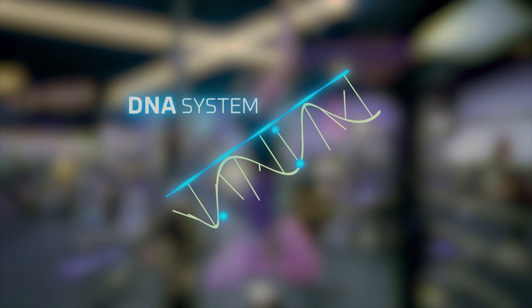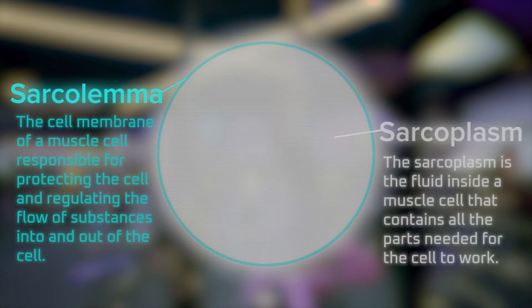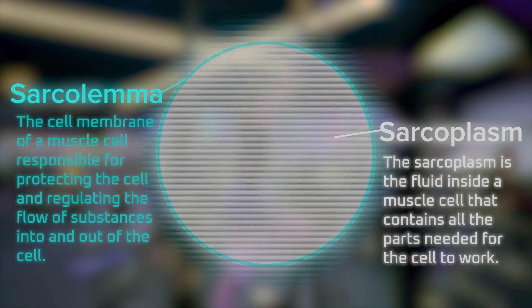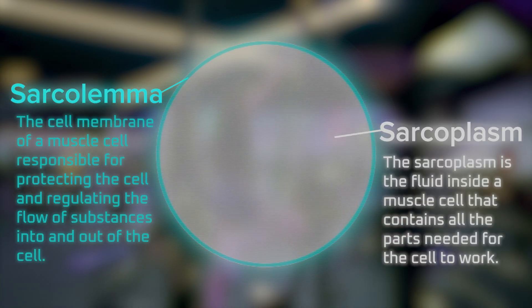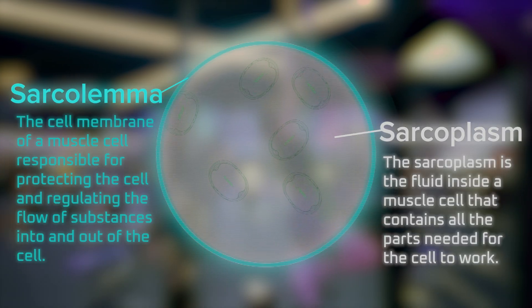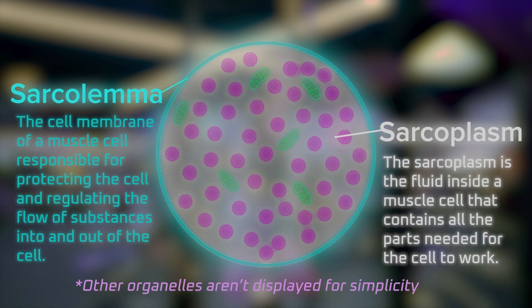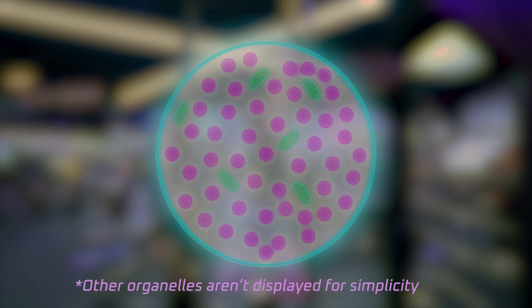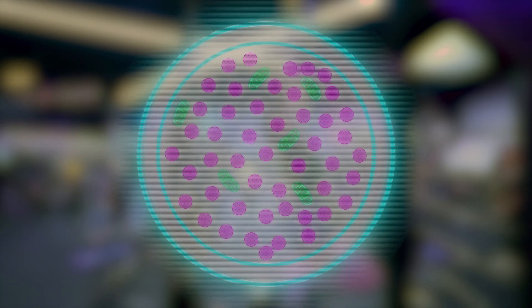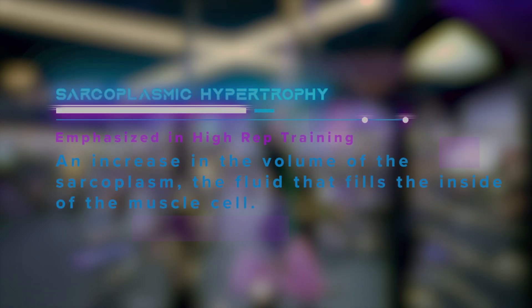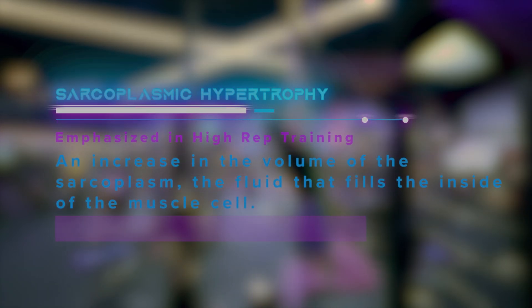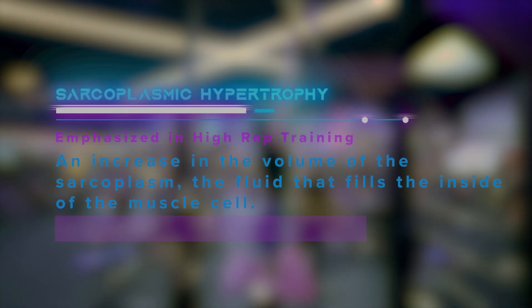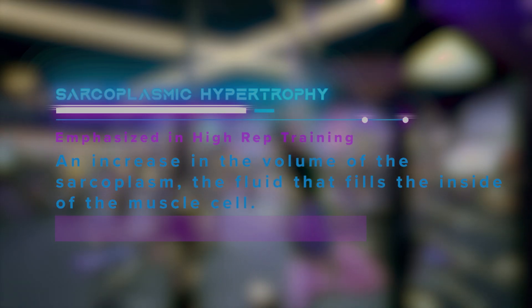Without going super in-depth, here's the ABCs of muscle anatomy. There's the outer layer of the cell, and then there's the fluid — think of it as the container of the cell. This is where all the organelles are floating around: the mitochondria, the nucleus, all of that. This container can actually grow, and that type of growth is called sarcoplasmic hypertrophy — you're enlarging the sarcoplasm, which is the container of the cell.